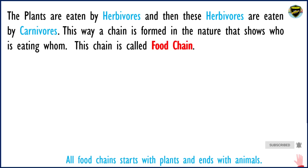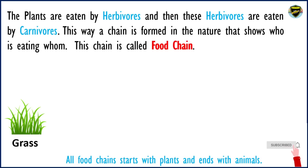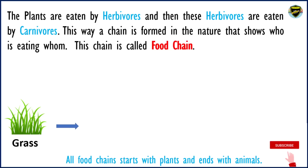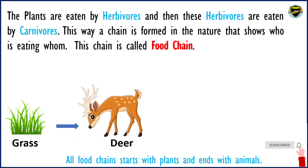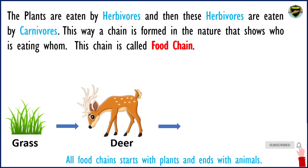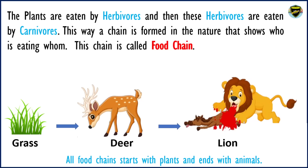Let us understand this food chain with the help of a picture. Grass is the producer, which is eaten by the deer, which is the primary consumer. And the deer is finally eaten by the lion, that is the secondary consumer. This is a small food chain.